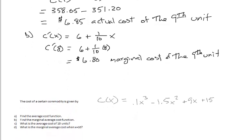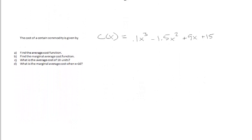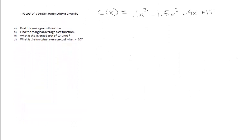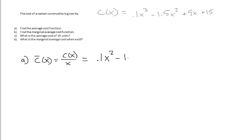Now we want to look at average cost. In this example, the cost of a commodity is given by c(x) = 0.1x³ - 1.5x² + 9x + 15. In part a we want to find the average cost. The average cost, represented by c̄(x), is equal to c(x) divided by x — so we take our cost function and divide every term by x. What we end up with is c̄(x) = 0.1x² - 1.5x + 9 + 15/x.